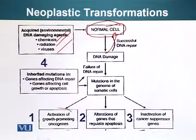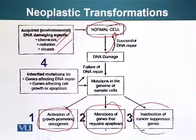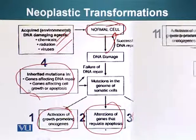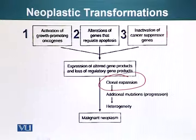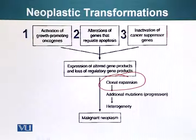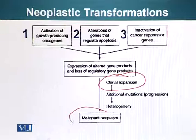The types of genes that can be damaged to result in cancer include: activation of growth-promoting oncogenes, alterations in genes that regulate apoptosis, inactivation of cancer suppressor genes, and mutations that affect the DNA repair system. With these kinds of mutations, if their altered gene products accumulate, they can result in clonal expansion — one cell keeps dividing and making identical copies of itself. Over time, these excess cells can accumulate other mutations, resulting in the ability to migrate and invade other tissues, which is called metastasis, ultimately resulting in malignant neoplasm, or cancer.